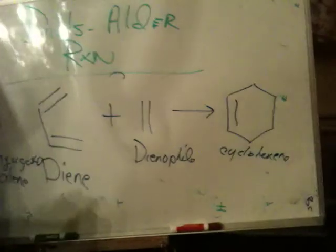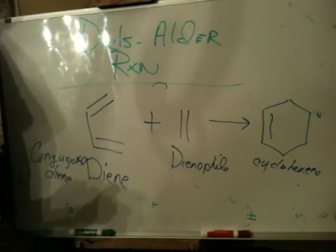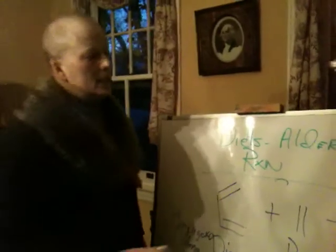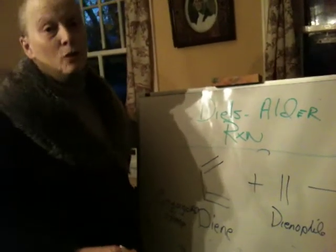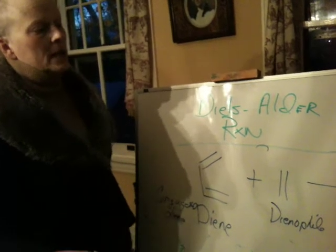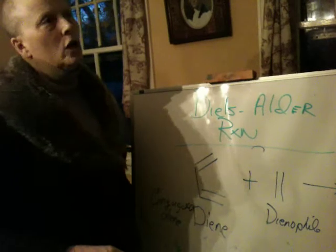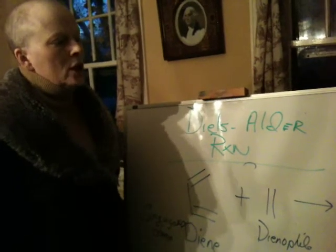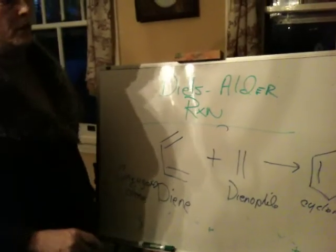These two components react with one another and form a cyclohexene. This reaction is an extremely important organic reaction because it involves the formation of six-membered rings and the formation of carbon-carbon bonds. Six-membered rings are extremely important in organic chemistry, in the pharmaceutical world, in the natural world, and in the biochemical world because they are extremely prevalent. If you looked at natural products or biomolecules, you would constantly see six-membered rings — they are extremely ubiquitous in nature.